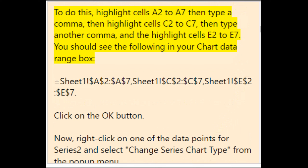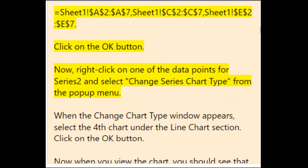You should see the chart data range showing Sheet1!$A$2:$A$7, Sheet1!$C$2:$C$7, Sheet1!$E$2:$E$7. Click OK. Then right-click on one of the data points for Series 2 and select Change Series Chart Type. When the Change Chart Type window appears, select the fourth chart under the line chart section, then click OK. Now Series 2 should display as a line graph.